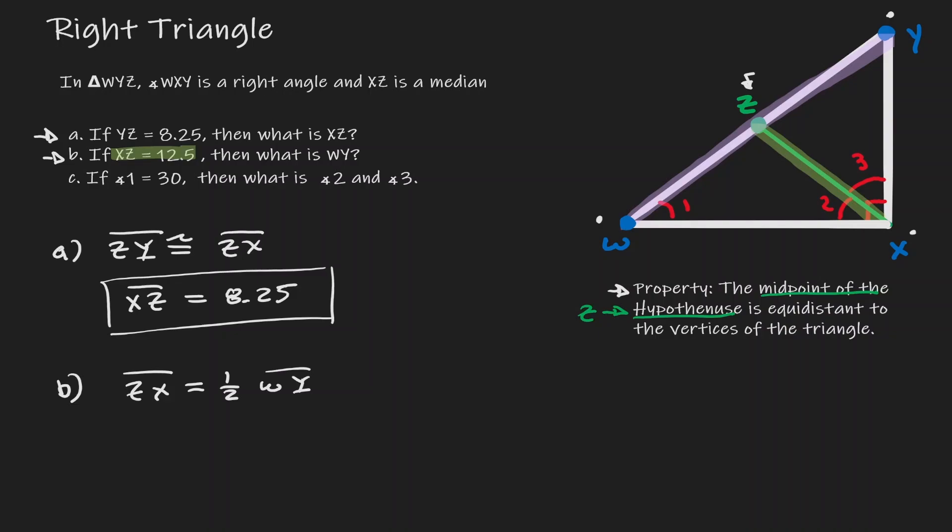Now that we have that relationship, it's just a matter of plugging in our values. XZ is 12.5, one half, and WY is the unknown. The only thing we have to do here is multiply by 2 on both sides. Now we got our result. WY is equivalent to 25.